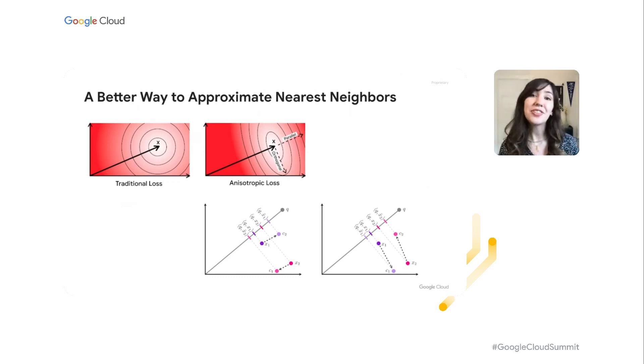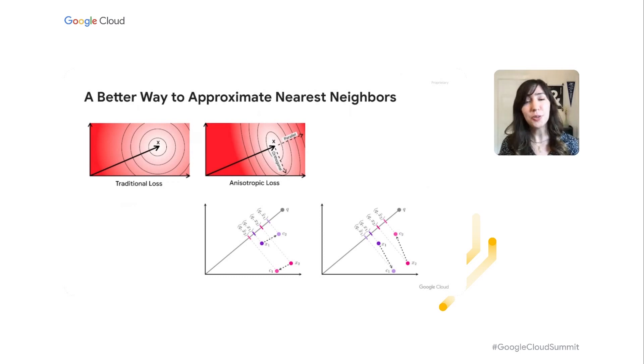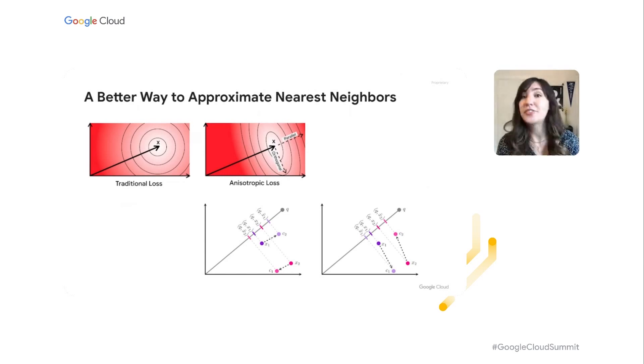We used this new algorithm to build an internal version of Matching Engine that actually powers tons of different Google products, like Google Search and YouTube. And now through Matching Engine, we've made it available to you — so when you want to search through billions of vectors, you can do it quickly and efficiently using this algorithm. That's Matching Engine. Now I'm going to hand it over to Nikita, who's going to talk about another Google product built in strong collaboration with research.